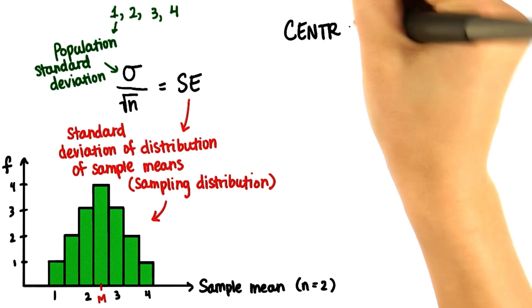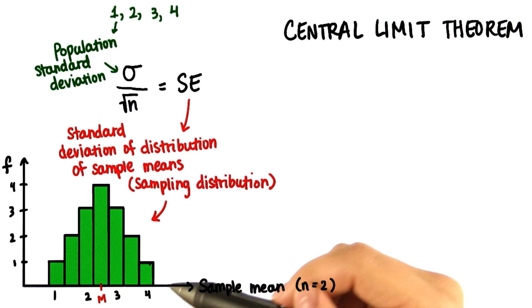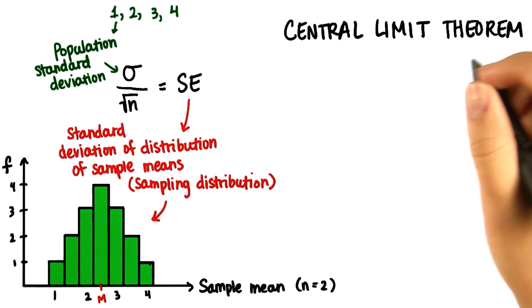This is called the central limit theorem. And it not only holds true for these simple populations, but for any population.